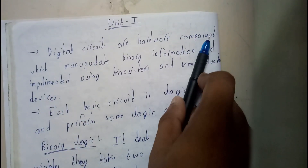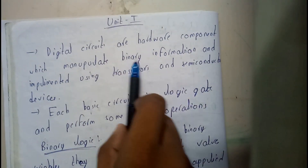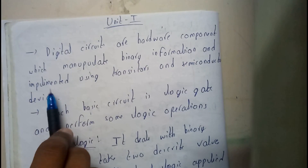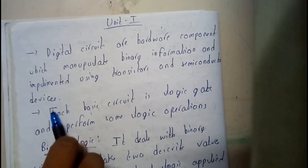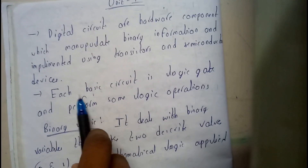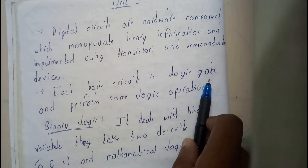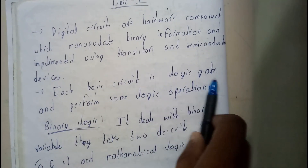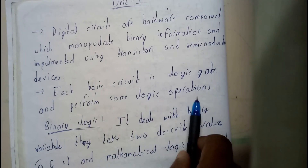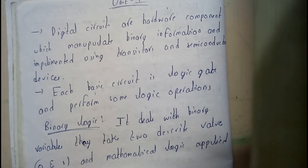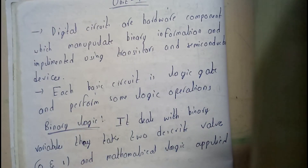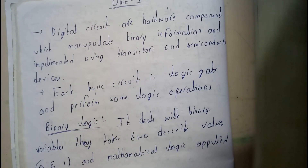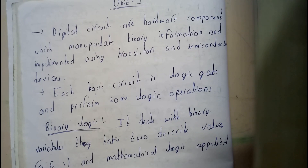Digital circuits are hardware components which manipulate binary information and are implemented using transistors and conductor devices. Each basic circuit is a logic gate and performs some logical operations. Basically, a digital circuit is a hardware component — even in our phones and computers, everywhere we will be finding these kinds of digital circuits.